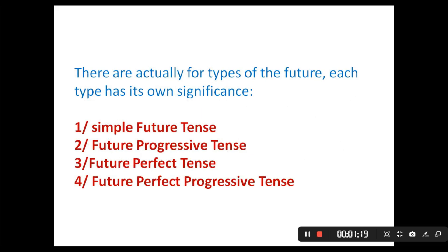There are actually four types of the future, and each tense has its own significance: simple future tense, future progressive tense, future perfect tense, and future perfect progressive tense. The third and the fourth are less used than the first two — they are literally used by people in literature.